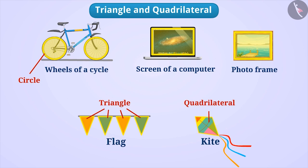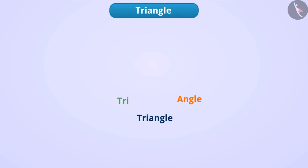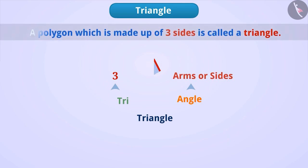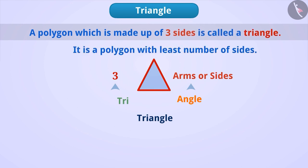First we will learn about triangle. The word triangle is a combination of two words: tri and angle. This gives us a sense of its meaning. Tri means three and we all know angles. Therefore, we can say that a polygon with three sides is called a triangle. It is a polygon with the least number of sides.